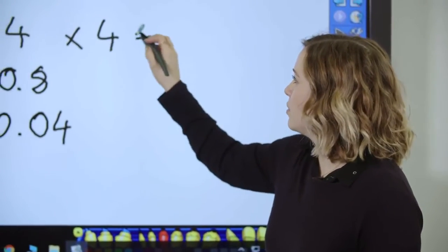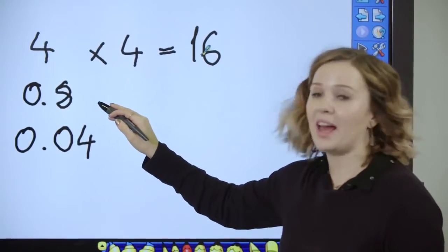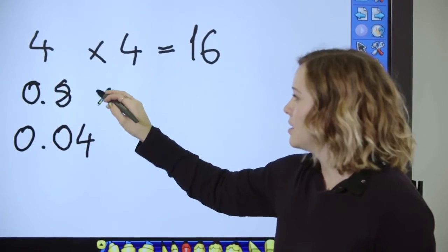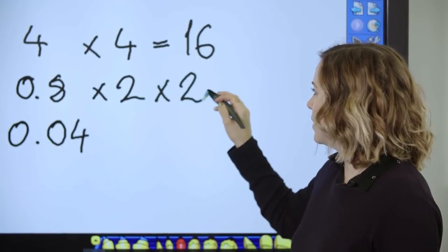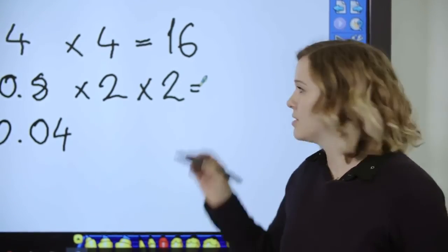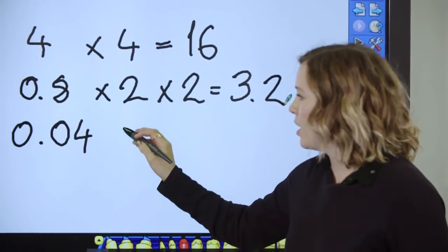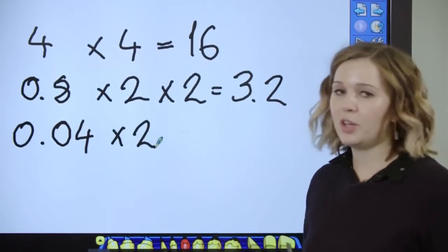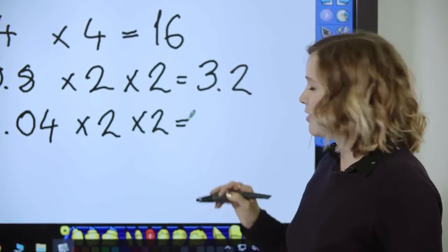So we could do four times by four which gives me 16. Then 0.8—so that's eight tenths—I'm going to do times by two is 16 tenths, times by two again is 32 tenths, which is the same as 3.2. And then with my four hundredths, if I times that by two it would give me eight hundredths, times by two again would give me 16 hundredths, which is the same as 0.16.